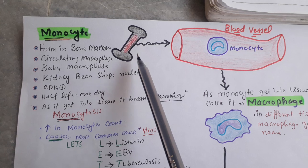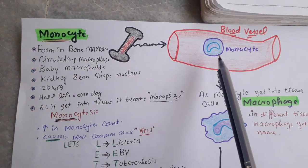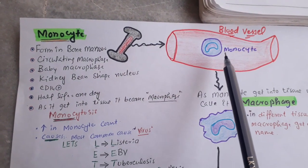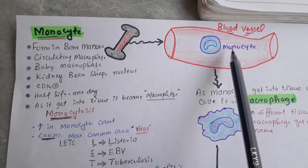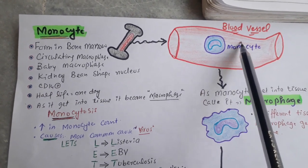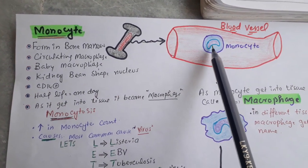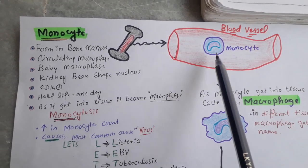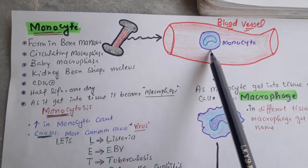The formation of monocytes occurs in the bone marrow. When present in the blood or blood vessels, it is called a monocyte and is also called a circulating macrophage — it is like an immature or baby macrophage. The nucleus is kidney-bean shaped. The marker for it is CD14 positive. The half-life of the monocyte is one day and its membrane is very smooth.